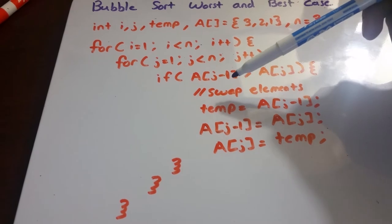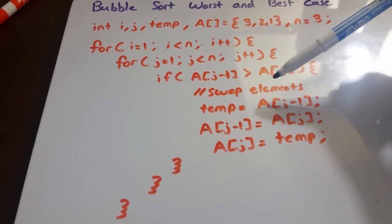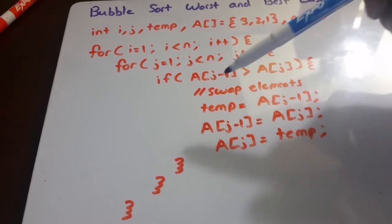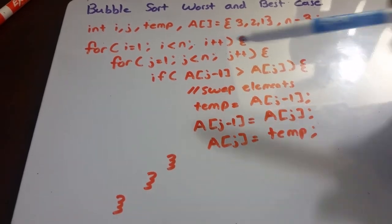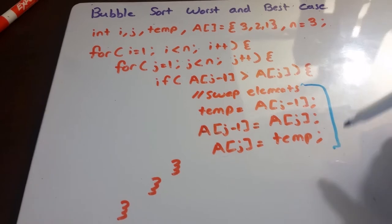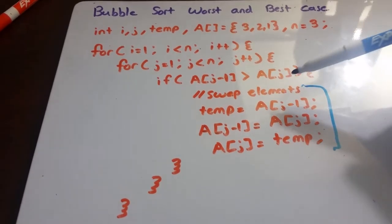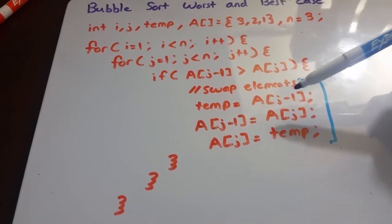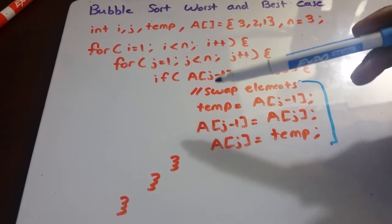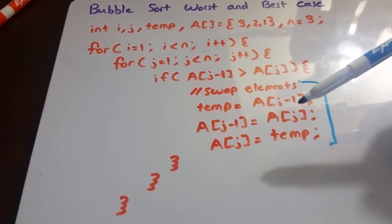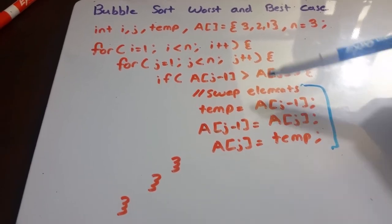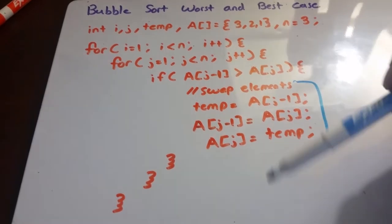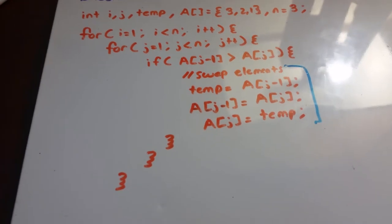We have an if statement that checks the elements in the array by comparing them. It sees if the element at position j minus one is greater than the next element at position j. If that previous element is greater, we swap these two elements. It sets temp equal to the element at position j minus one, then sets position j minus one equal to the element at position j, and sets position j equal to temp.